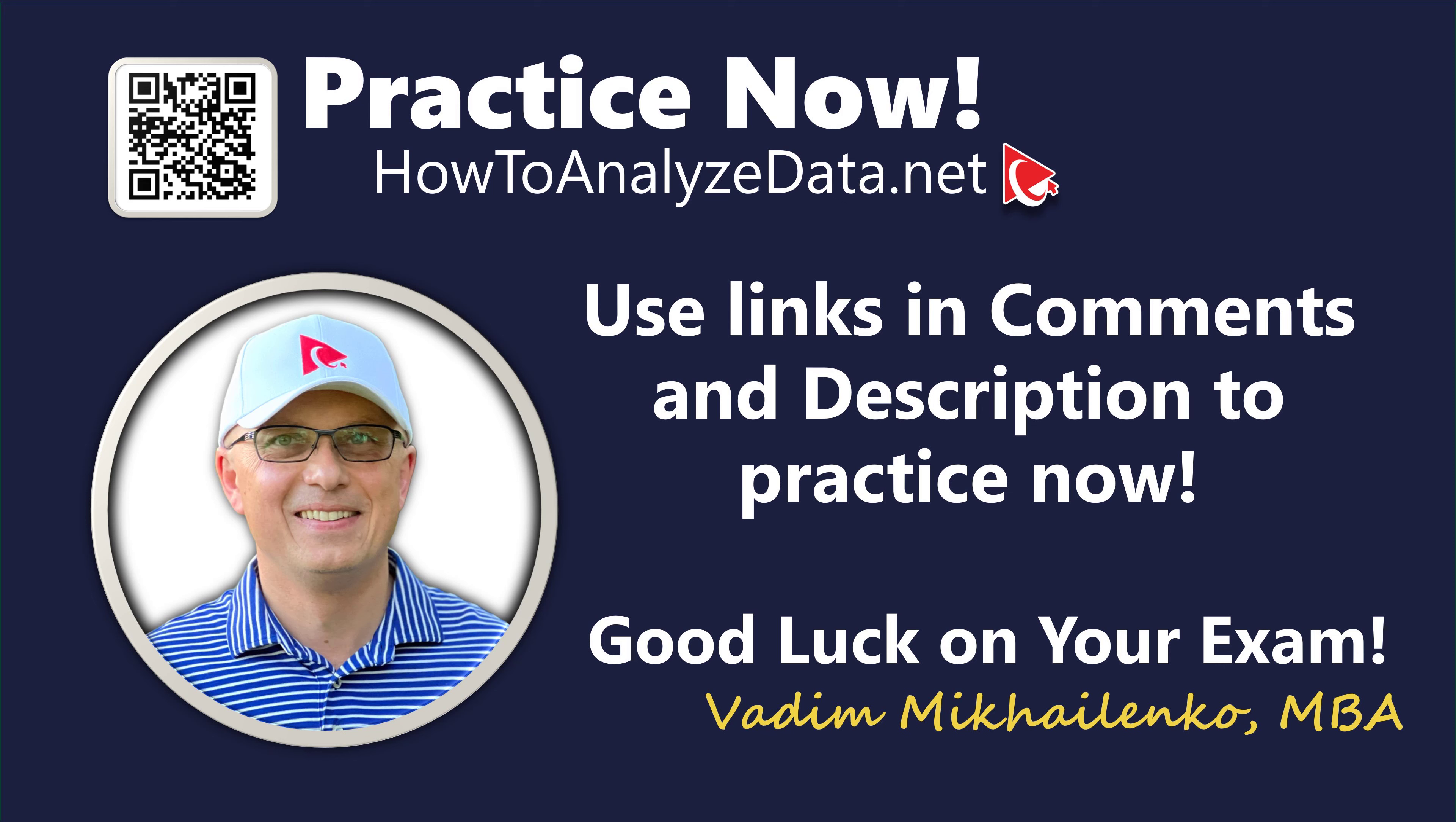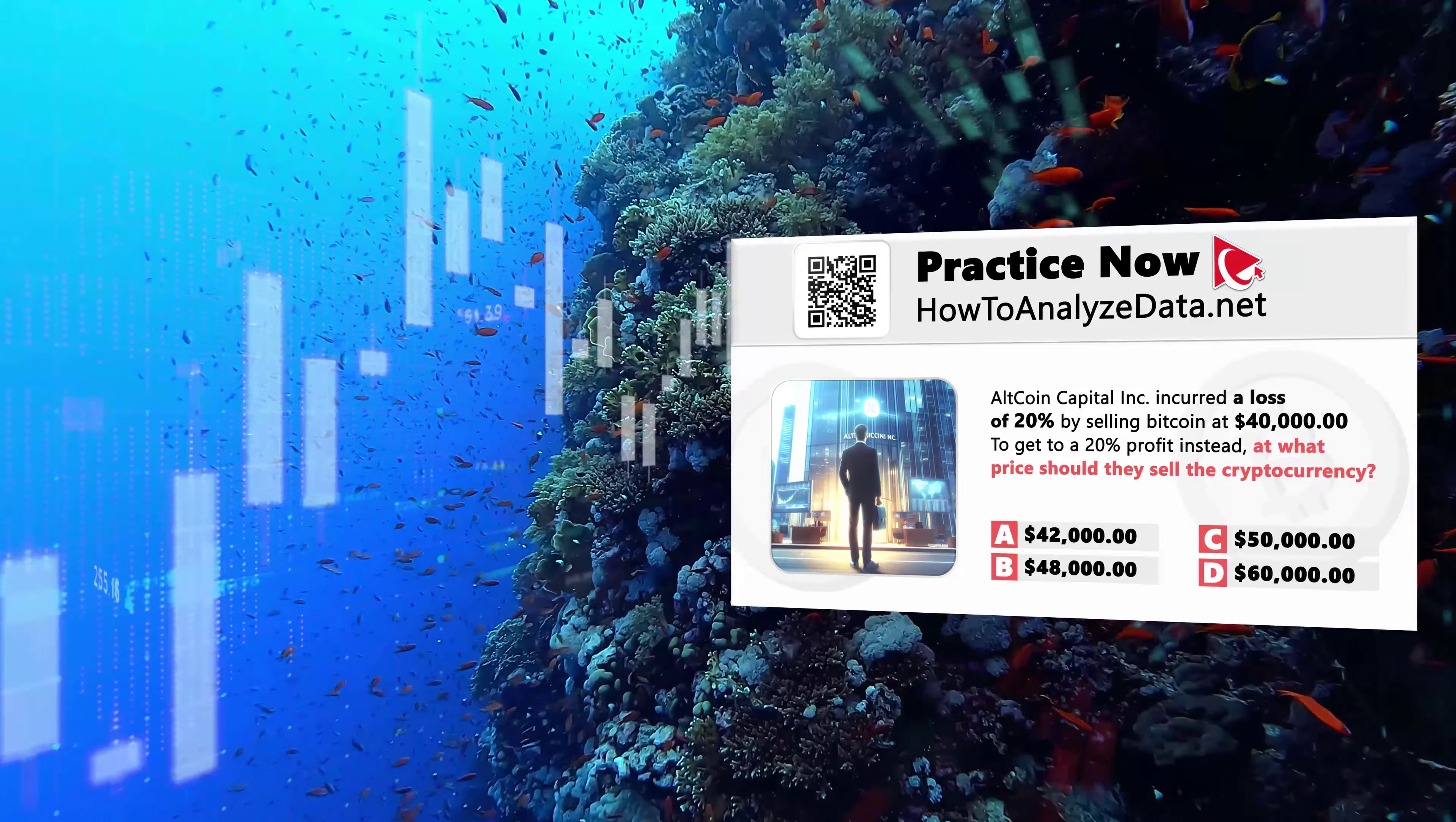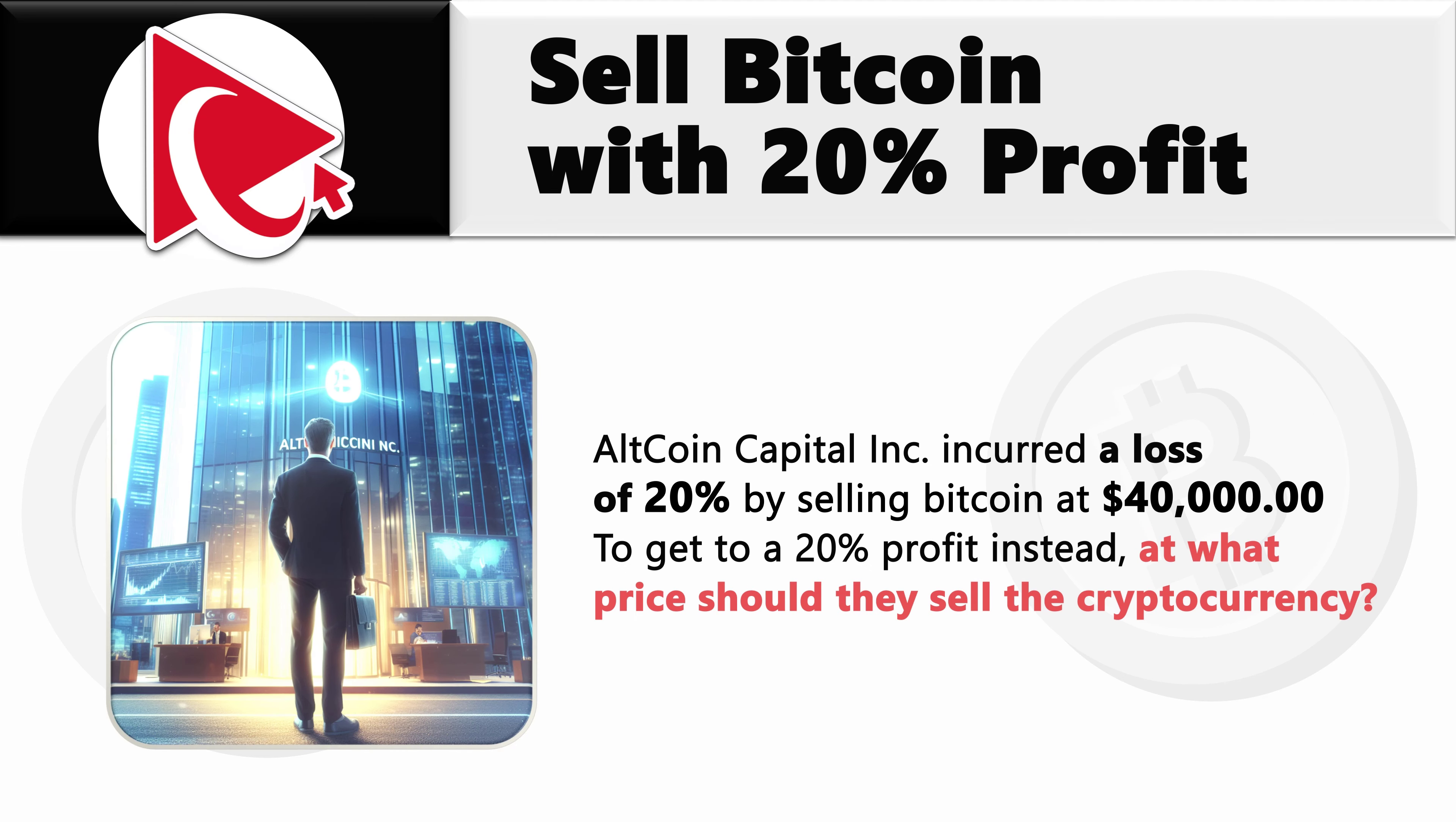It's hard to deny, but solving Bitcoin volatility problem is like telling a weather forecast to a goldfish. One day it's sunny, the next day it's stormy and you hope they swim through the waves without getting too seasick. With that in mind, here's the problem for you to solve. AllCoin Capital Inc. incurred a loss of 20% by selling Bitcoin at $40,000. To get to a 20% profit instead, at what price should they sell the cryptocurrency?